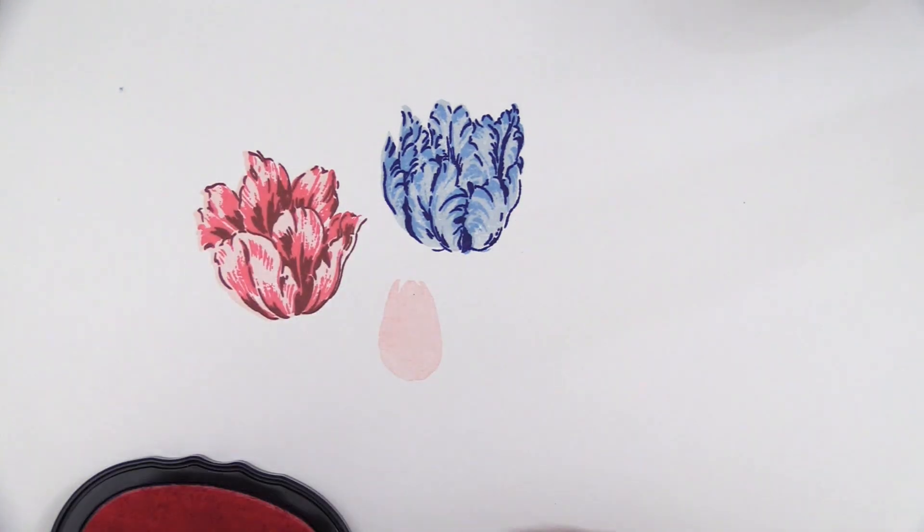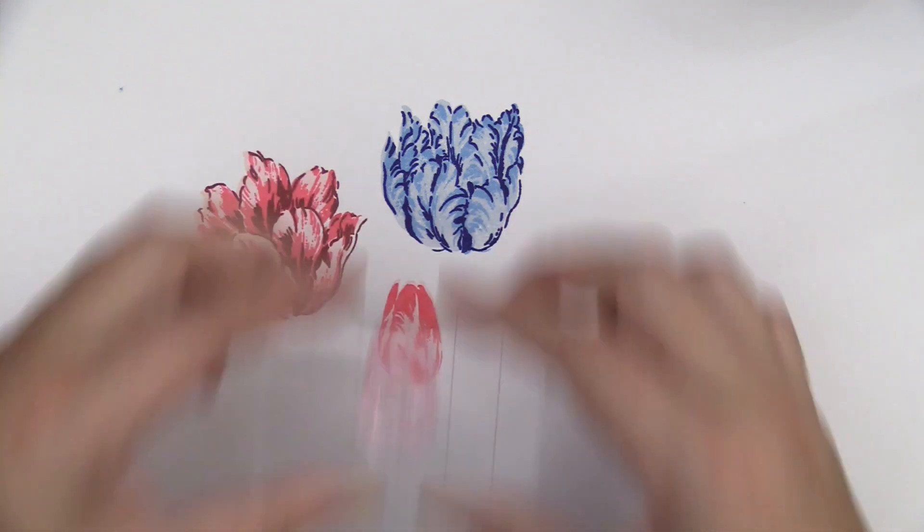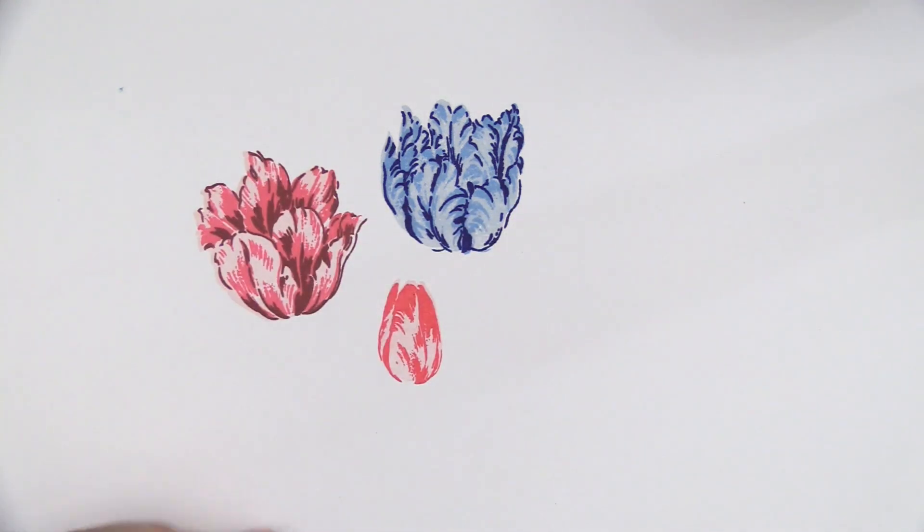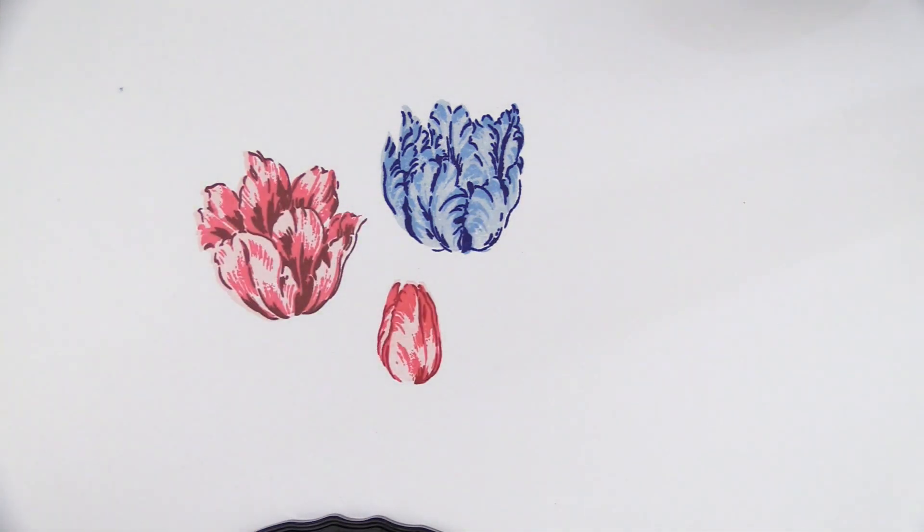The smallest one is fairly easy. You stamp it with frosty pink, which is the lightest one for the solid image. Go right on top using coral berry and then the outline image over here, I used ruby red.